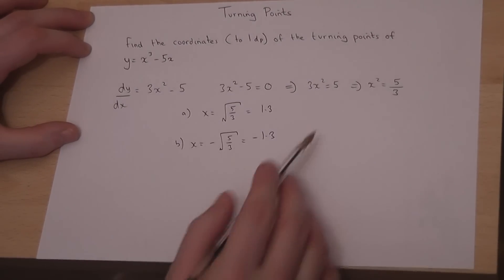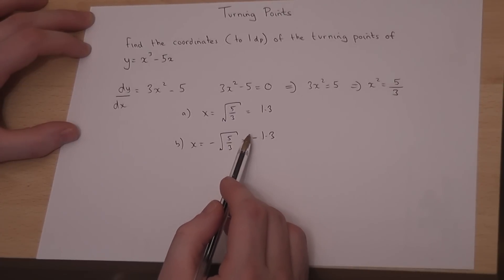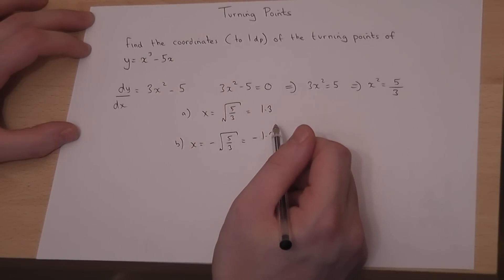So, when we have x squared equals a number, don't forget there are two possible solutions. Now the question says find the coordinates, so we must also find the y coordinate.